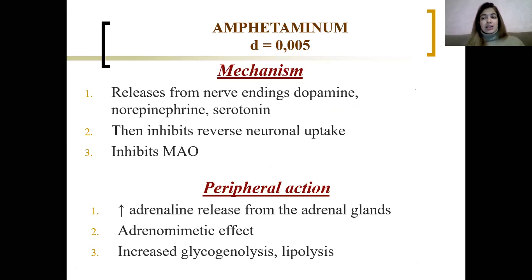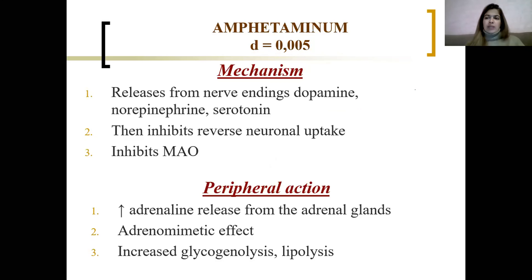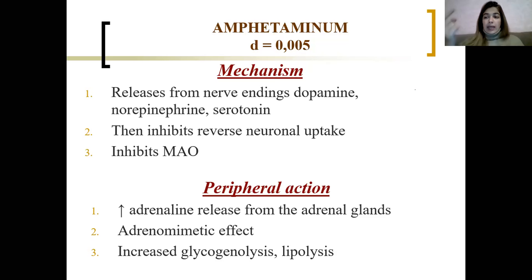Why does this happen? Because of the mechanism. Amphetamine works through several mechanisms: first, it releases dopamine, norepinephrine, and serotonin from nerve endings — a big release of all three monoamines. It also inhibits neuronal reuptake, so reuptake is inhibited while release is increased. Additionally, it inhibits MAO. From antidepressants, we had drugs inhibiting reuptake or inhibiting MAO, but amphetamine gives all these effects simultaneously.